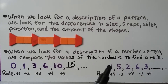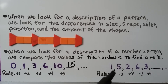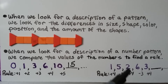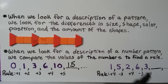For the pattern 1, 5, 2, 6, 3, and then a missing number: the difference between 1 and 5 is +4, then 5 to 2 is −3, then 2 to 6 is +4, then 6 to 3 is −3. The rule is plus 4, minus 3, repeating. So 3+4=7 — the missing number is 7.